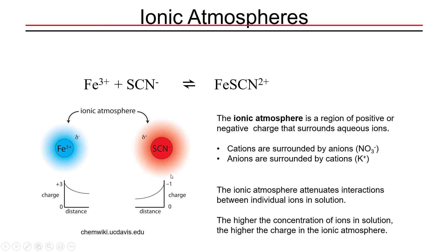And the opposite occurs for the thiocyanate: an envelope of potassium ions lines up around the thiocyanate's hydration sphere. This is the ionic atmosphere — a region of opposite ionic charge that makes it more difficult for oppositely charged ions to collide effectively and undergo a chemical reaction in a real solution with measurable ionic strength. This is what ionic strength effects and ultimately activity coefficients are modeling: the electrostatic repulsion created by the ionic atmosphere, which makes equilibrium reactions more difficult than they would be if only the ions of interest were present in deionized water.